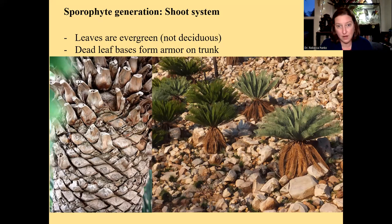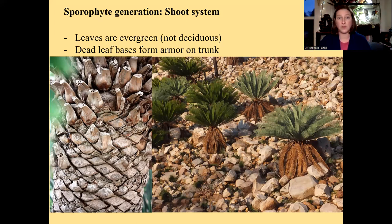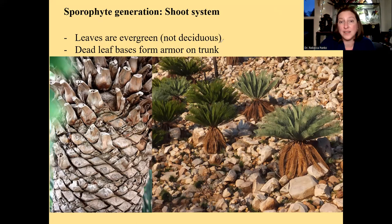Cycads have leaves that are called evergreen, meaning they don't fall off each year. We covered this when we talked about the phenology assignment. Leaves that are evergreen don't fall off every year. When leaves fall off every year, we call that deciduous. Cycads are not deciduous — the leaves are evergreen and stay on all the time.